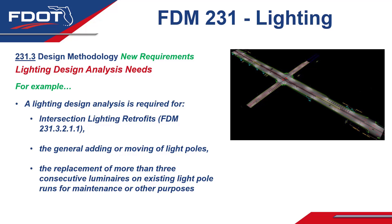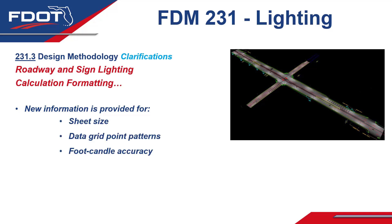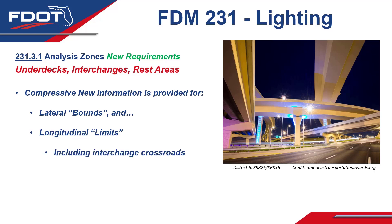A light design analysis helps ensure a safe design with proper light uniformity and the avoidance of bright and dark spots, and also helps check lengthy runs of LED lights for glare requirements. Additionally, the FDM has new information provided for output sheet size, data grid point patterns, foot candle accuracy of the data points, and the need for a 3D model if bridges or solid objects block the light. Moving to Section 231.3.1, the FDM will now assist with more detailed information on analysis zones for underdecks, interchanges, and rest areas, including lateral and longitudinal bounds and interchange crossroads.